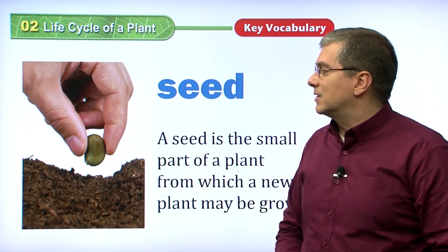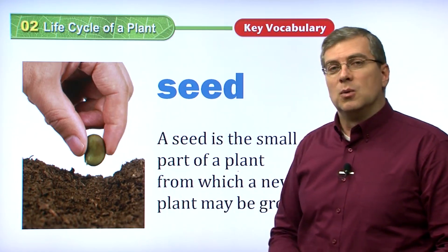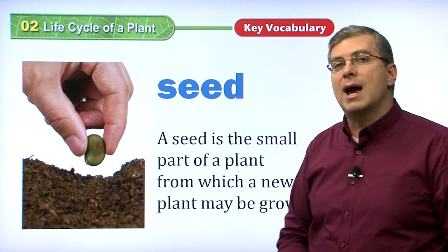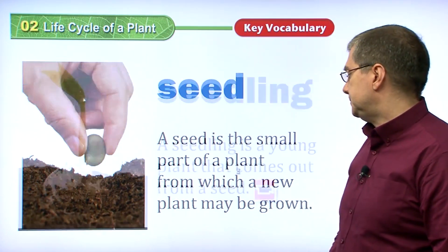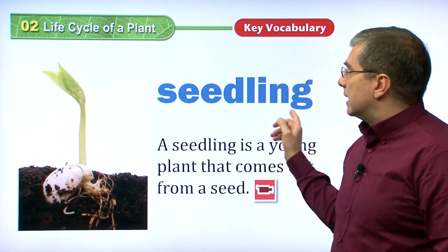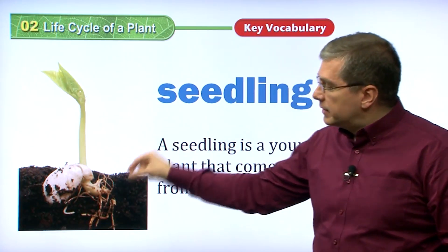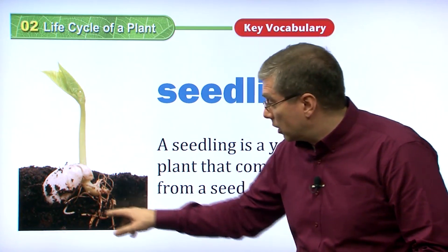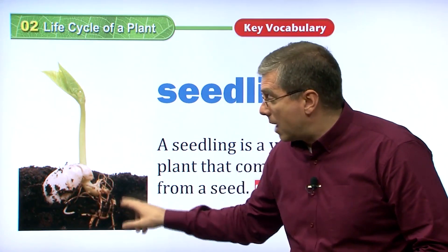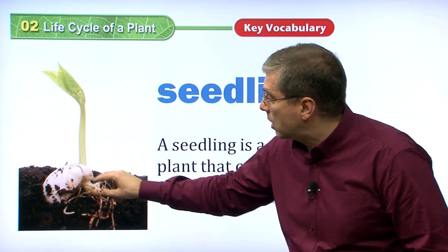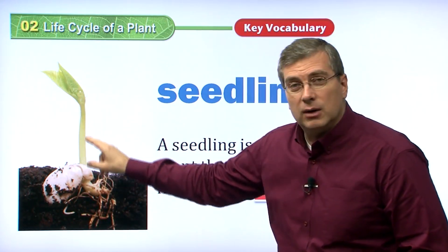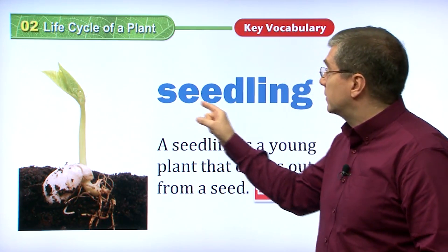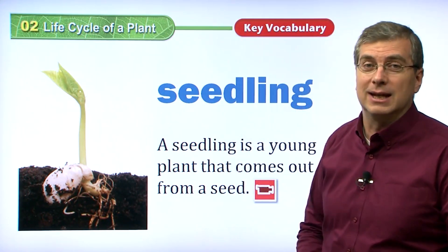In many cases, of course, human beings will take the seeds and put them in the ground to make them grow. A seedling — when we put the seed in the ground, after a while, if we give it good ground or soil, and we give it some water, a very small plant starts to grow. That is called a seedling.